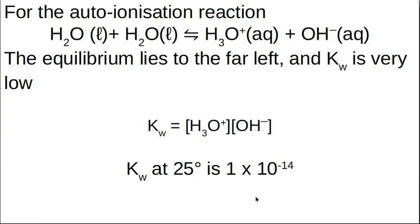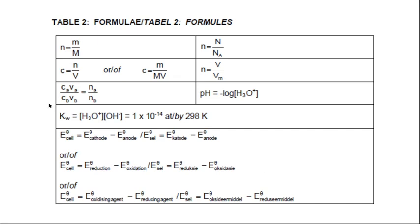This reaction doesn't occur very readily. Water is normally water liquid when you leave it alone — there's a very low proton concentration and a very low hydroxide ion concentration. So when the equilibrium lies left, Kw becomes a very small number. The equilibrium constant for this reaction, which is the concentration of hydronium ions times hydroxide ions, at 25 degrees Celsius is 1 × 10⁻¹⁴. This is given in the formula table at 298 Kelvin, which is 25°C.